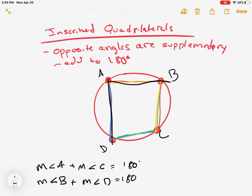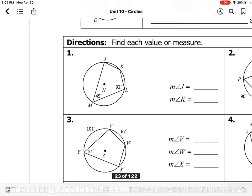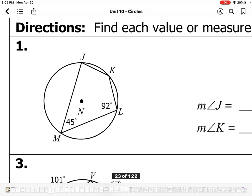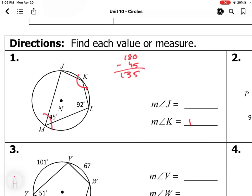Nothing too crazy, nothing too difficult. Let's go ahead and take a look at some practice problems. If this angle right here is 45, what must this angle be? Well, I have to add up to equal 180. So 180 minus 45 gives us 135. So measure of angle K is 135. Measure of angle J, that's opposite this angle. So 180 minus 92 gives us 88. Piece of cake. We're done. Just kidding.